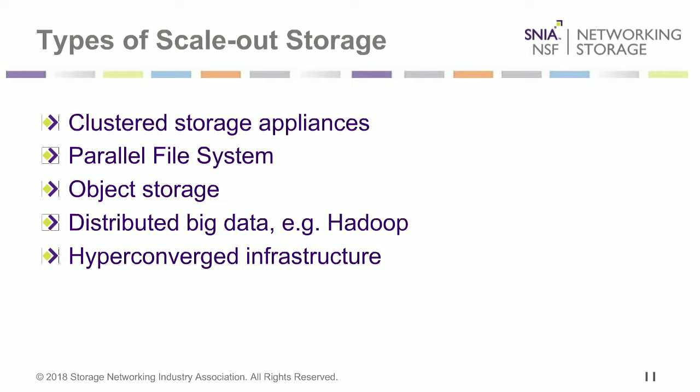Finally, hyperconverged infrastructure typically involves a series of servers each with compute and storage, possibly a hypervisor. Each node may access storage on other nodes for distributed storage, or store locally but replicate to other nodes for disaster recovery — so if you lose a node, the data still exists on one or two other nodes. Hyperconverged is a type of distributed storage that also includes distributed compute.